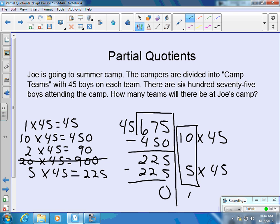So there will be 15 teams at Joe's camp with 45 boys on each team. So 675 divided by 45 is equal to 15.